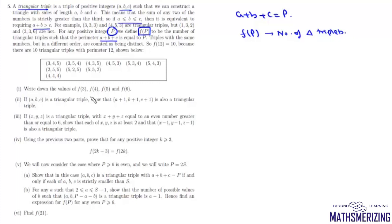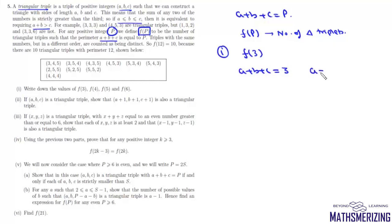The first question asks us to write the values of f(3), f(4), f(5), and f(6). For f(3), p = 3 means a + b + c = 3, and since a, b, c are positive integers, the only possibility is a = b = c = 1, giving the triangular triplet (1,1,1) — an equilateral triangle. So f(3) = 1.